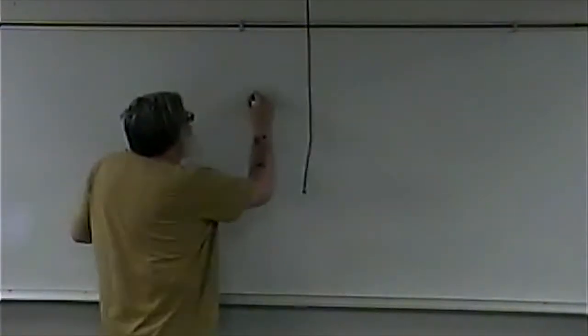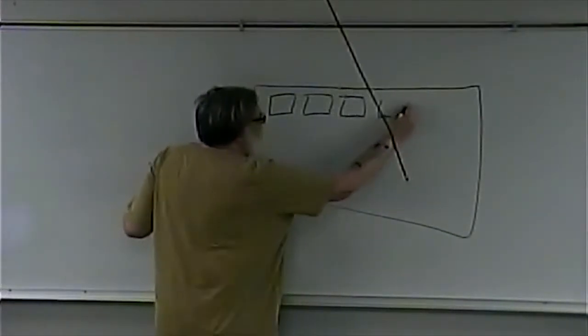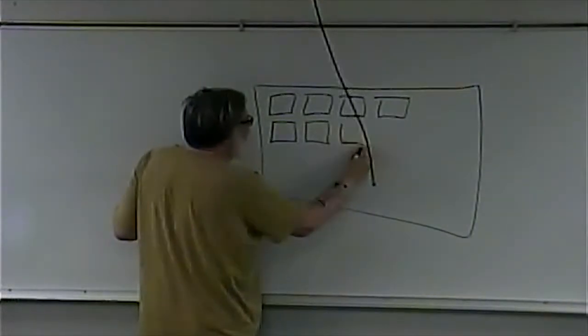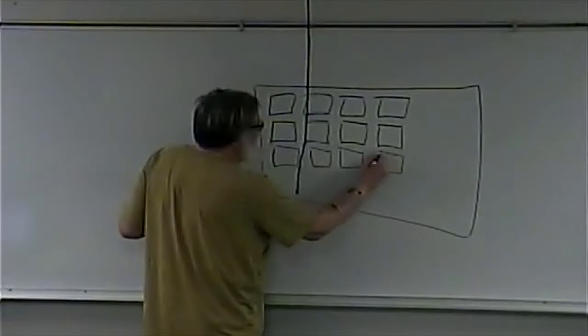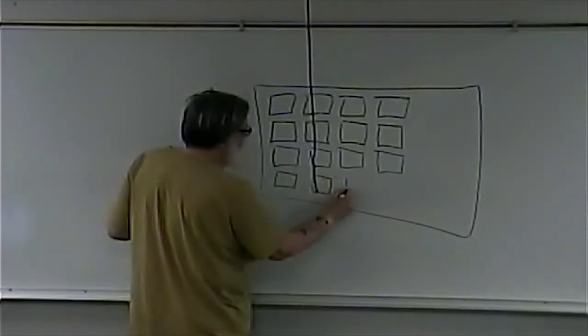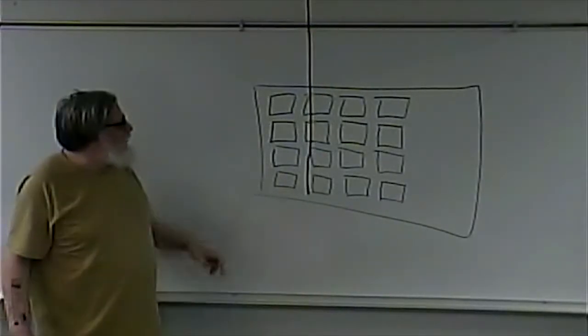We started off by saying we're going to have a deck of cards, and the deck of cards is going to be dealt face down going across. So we have two things in play: our grid of cards, however many they may be. We have to make sure we leave pairs — an even number of cards — so there's a match for every card for this game to work. When you start off you're showing the back of the card.